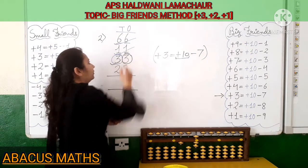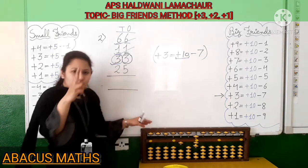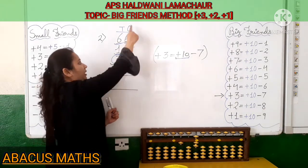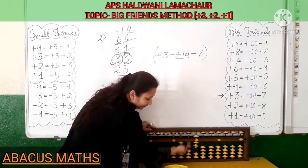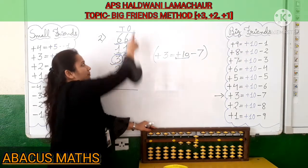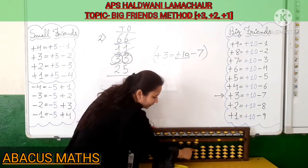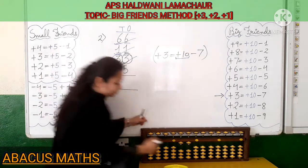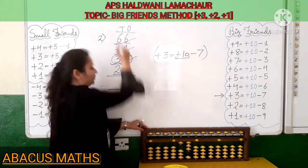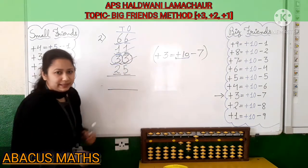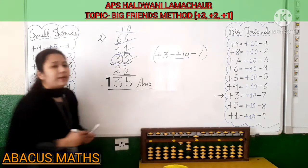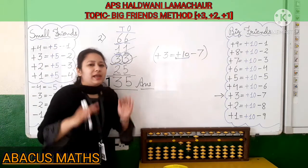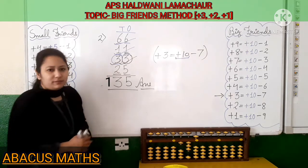Now you have to add this 3 in the 1's slot, but only 2 beads are there. Again, use the big friend formula. Since 3 goes in the 1's slot, add 10 in the 10's slot and minus 7 from the 1's slot: 5, 6, 7. Both 3's are added. Now add this 2 in the 10's slot and 5 in the 1's slot, and your sum is completed. You only have to apply the plus 3 formula wherever you get a lack of beads. We will move to our next sum now.